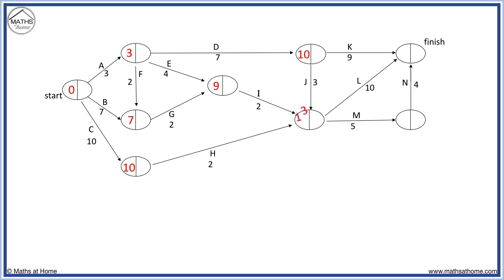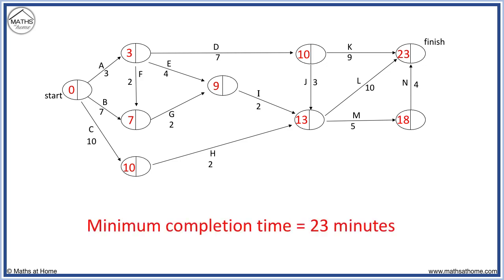13 plus 5 equals 18. Finally, we have a choice of 10 plus 9 equals 19, 13 plus 10 equals 23, or 18 plus 4 equals 22. 23 goes in this final node. Having completed this forward scan, we can see that the minimum completion time of the project is 23 minutes.